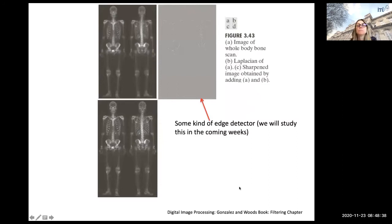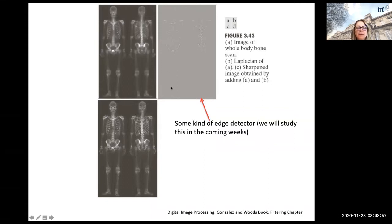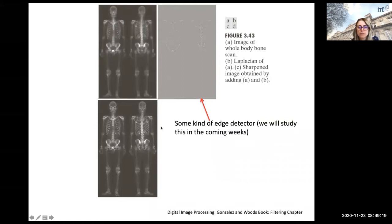Here is another example with a bone scan input image. C is adding A and B using a Laplacian edge detector, which we will cover today. A lot of features are highlighted, but noise is also introduced. Whether the expert prefers the original or this enhanced version depends on the application — domain experts typically like to see images in the original version, so be careful before presenting processed data.